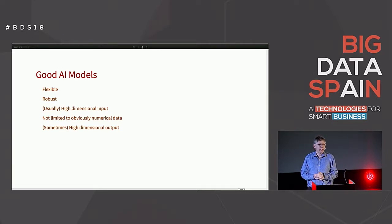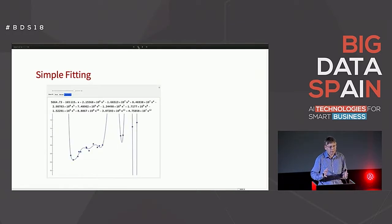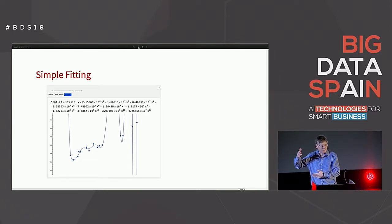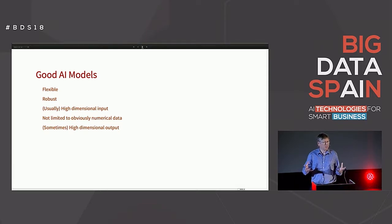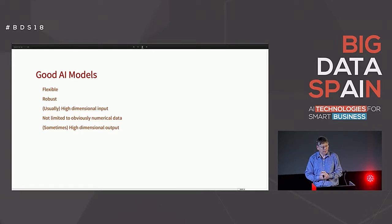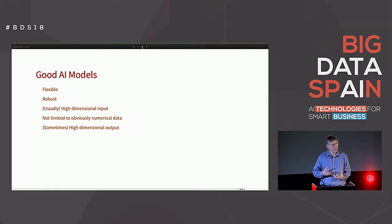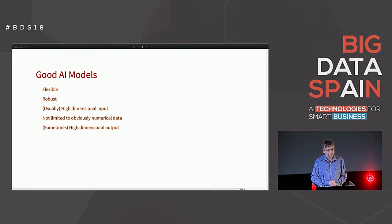But the biggest thing is dimensionality. In my 'how far have I traveled over time' example, I had one dimension in and one dimension out — time in, distance traveled out. Usually what we want to do is solve interesting problems, and interesting problems have very high-dimensional input — we have lots of data, not just one number. Very often we also want high-dimensional output, something that isn't just a number. And there's added complexity that it's not always numbers.